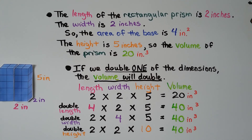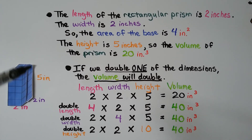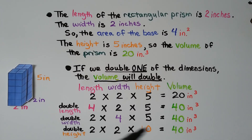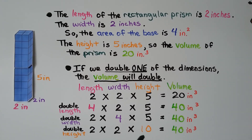If we double the width instead — keeping a 2-inch length and going to a 4-inch width, still 5 tall — we do 2 times 4, which is 8, times 5, that's 40 inches cubed. We doubled the width, and we doubled the volume. If we double the height to 10 inches, 2 times 2 is 4, times 10 is 40. So if we double any one of the dimensions, the volume will double.